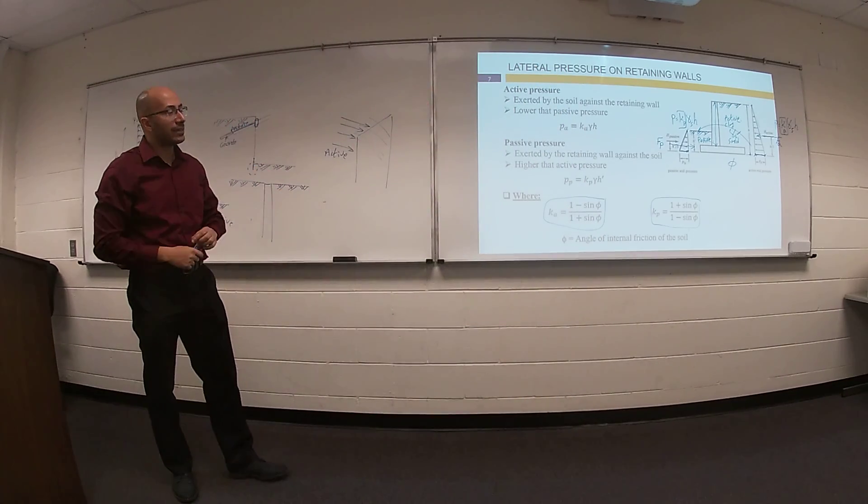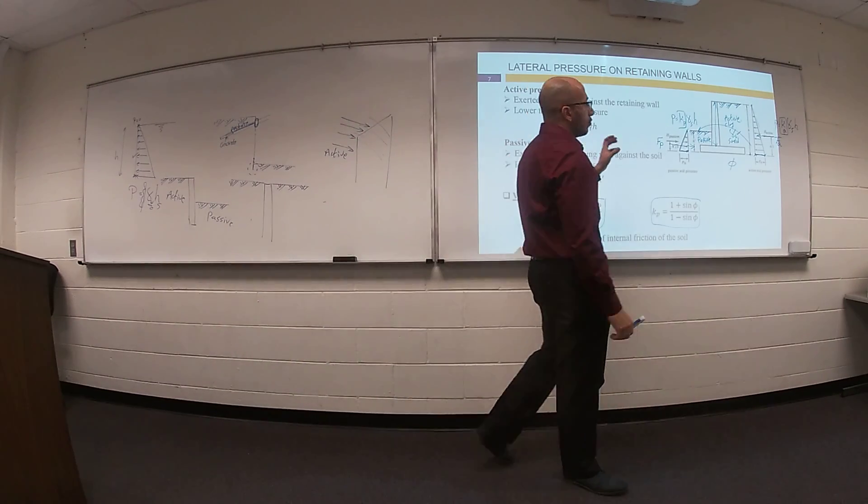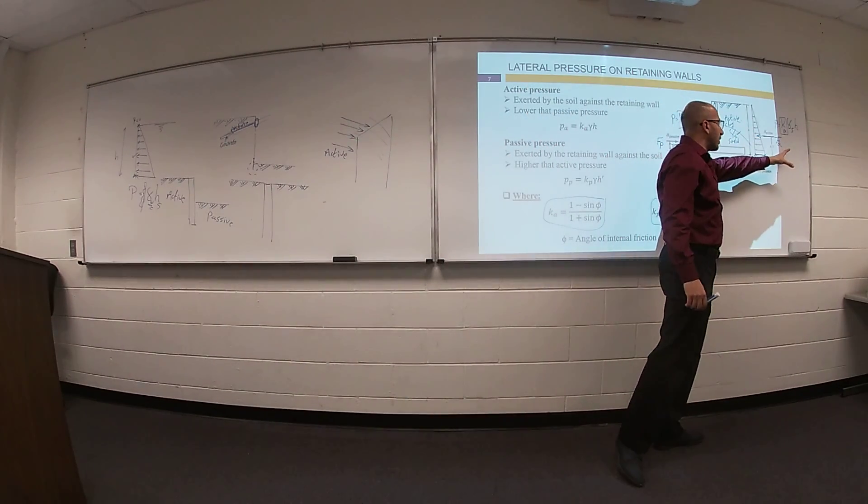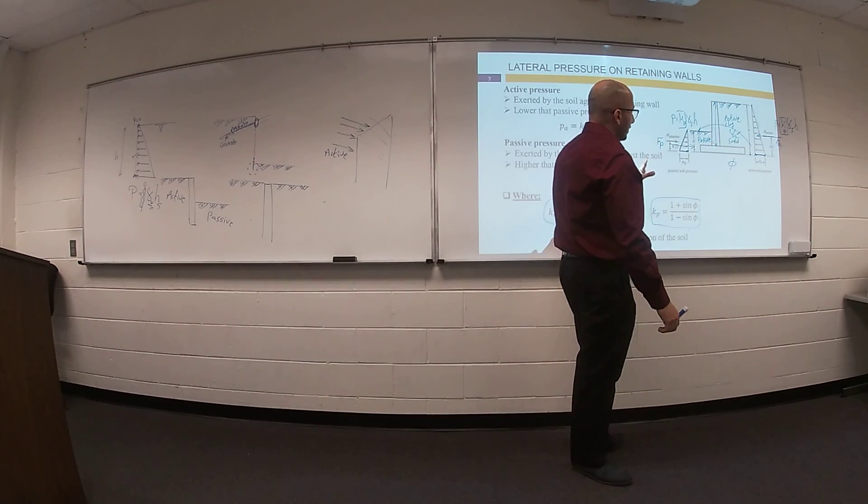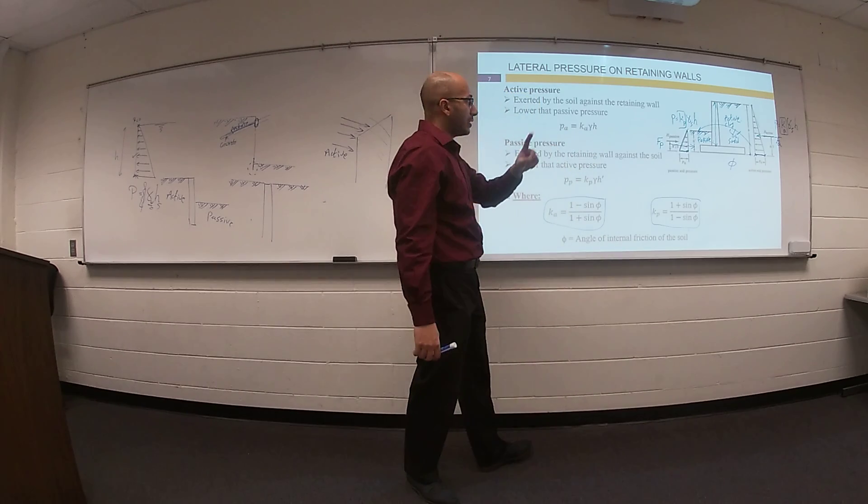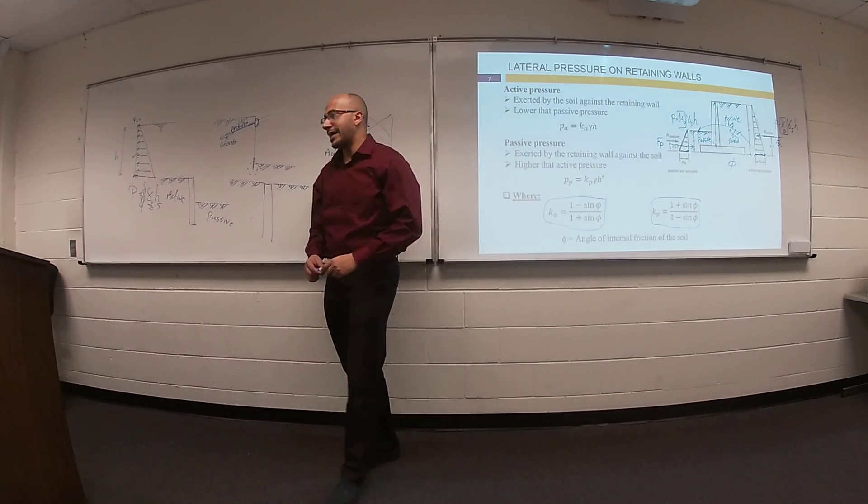So all of these stabilities, we will talk about it next time. But first, we learned how to convert the effect of soil on the retaining wall as pressure. We have active pressure, we have passive pressure. The only difference between the two sides: we have something called K active, we have something called K passive.